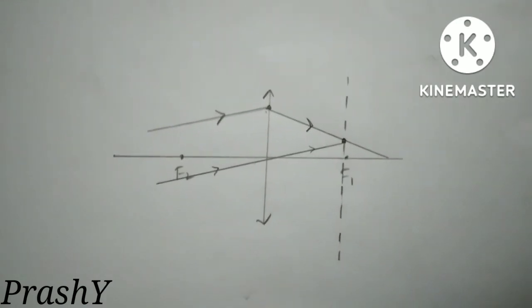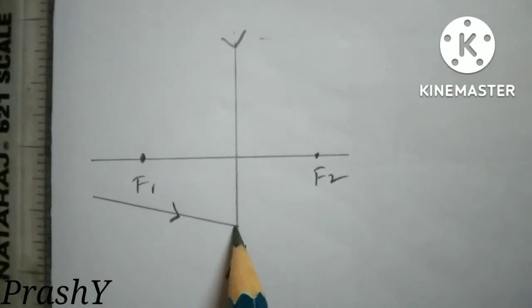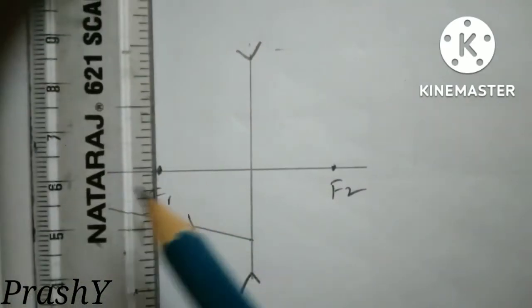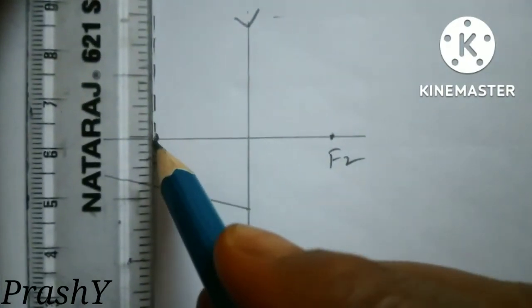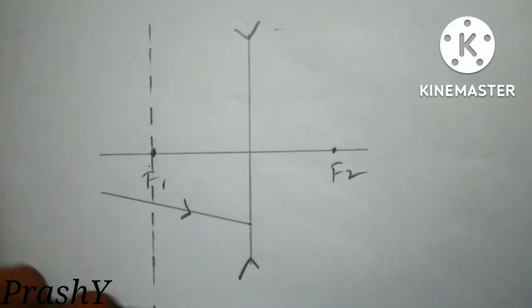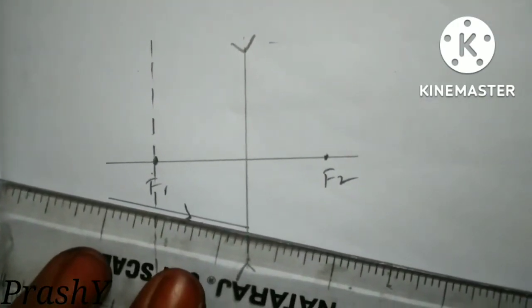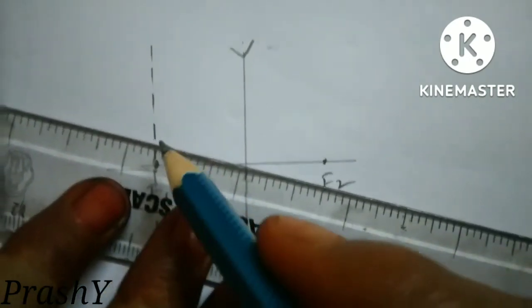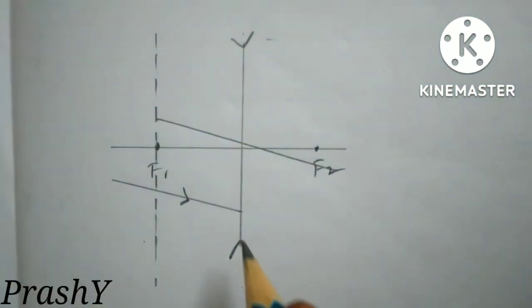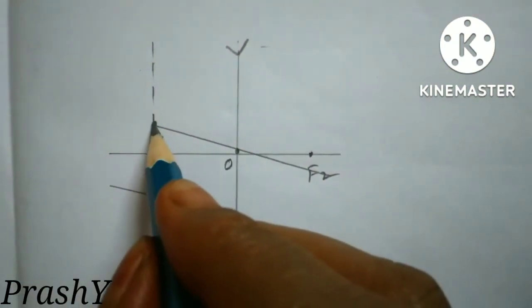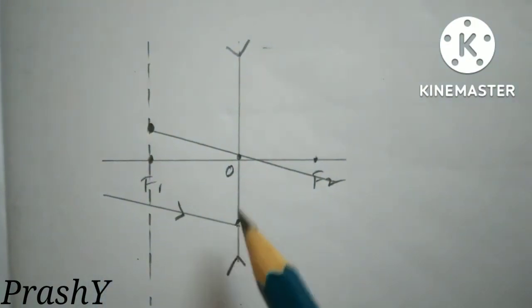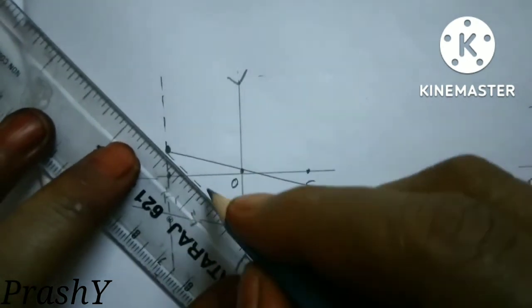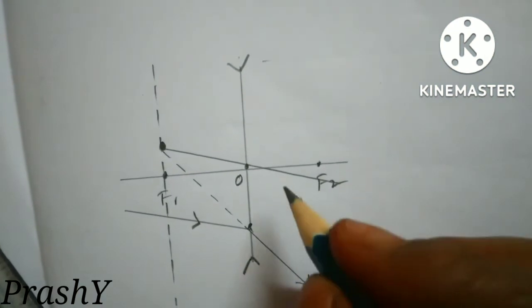Now let us draw for a concave lens. This is our incident ray given. We have to trace the image on the focal plane. For a concave lens focus is at F1, so draw dotted lines to make the focal plane. This is the original incident ray. Draw another parallel line passing through the optic center. This is the point of incidence. Join these two: dotted lines from the focal plane up to the lens, then a straight line as the refracted ray.